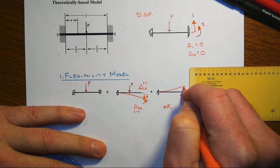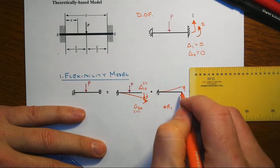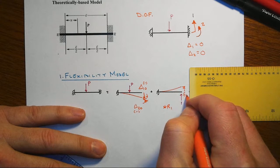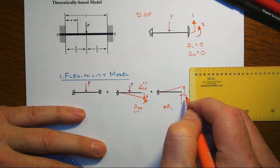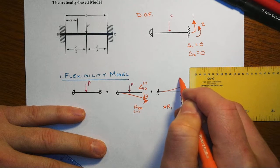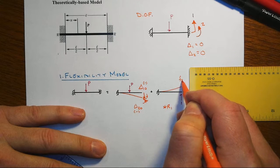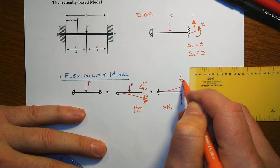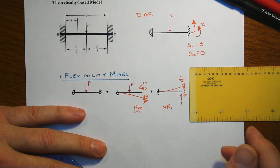Again, we want to look for the displacements that are there. That would be F11. It's a flexibility coefficient because it's in response to a unit load. And then F21 is the degree of freedom caused by the unit load at one.